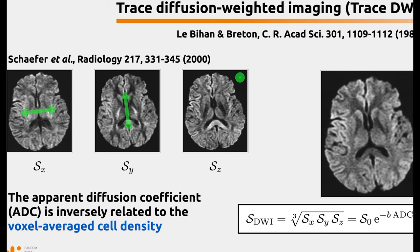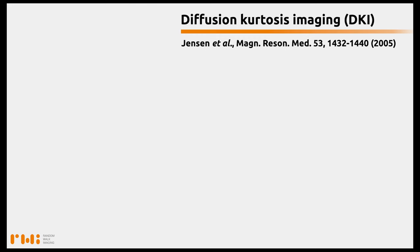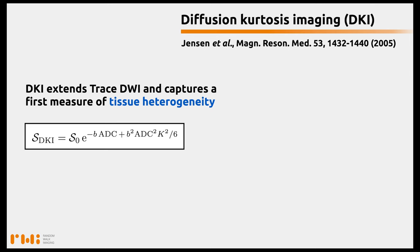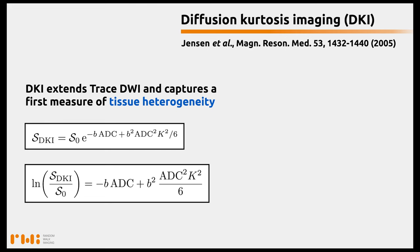This apparent diffusion coefficient is inversely related to the voxel-averaged cell density. A more advanced method, DIVISI or DKI, builds upon Trace DWI to measure tissue heterogeneity, or tissue complexity. In this case, the signal in DKI is the same signal as Trace DWI — S0 exponential minus B times the ADC — but you have a second term in the exponential that is linked to B squared, and this term features K, which is the mean kurtosis, a measure of tissue heterogeneity.